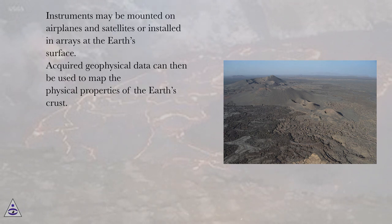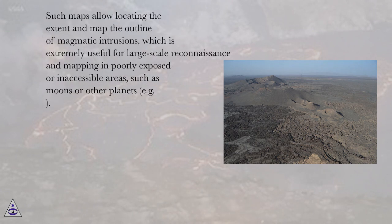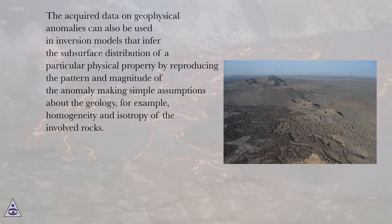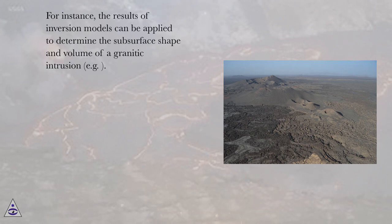Acquired geophysical data can then be used to map the physical properties of the Earth's crust. Such maps allow locating the extent and mapping the outline of magmatic intrusions, which is extremely useful for large-scale reconnaissance and mapping in poorly exposed or inaccessible areas, such as moons or other planets. The acquired data on geophysical anomalies can also be used in inversion models that infer the subsurface distribution of a particular physical property by reproducing the pattern and magnitude of the anomaly, making simple assumptions about the geology — for example, homogeneity and isotropy of the involved rocks. The results of inversion models can be applied to determine the subsurface shape and volume of a granitic intrusion.